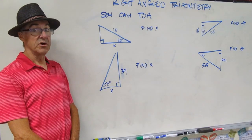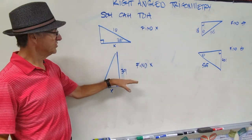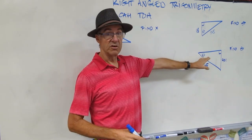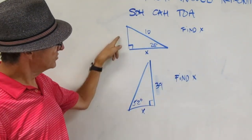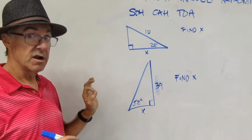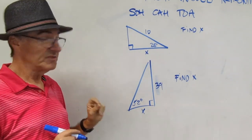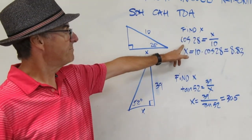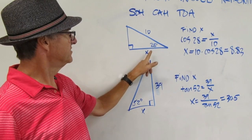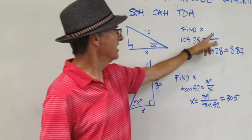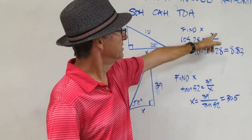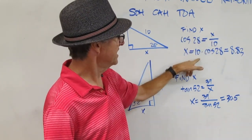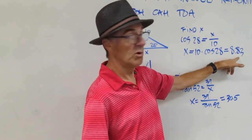Let's do four problems using SOHCAHTOA trigonometry. The first two, we're going to find a side length, and then the second two, we're going to find some angles. Here are two problems — this is assumed prior knowledge — so pause the video and do both of those problems. Cosine 28 is adjacent over hypotenuse, so x over 10. Rearranging, x equals 10 cosine 28, which is 8.83.